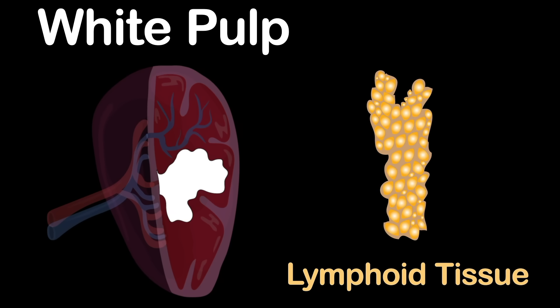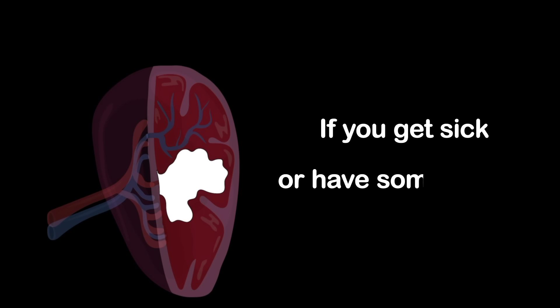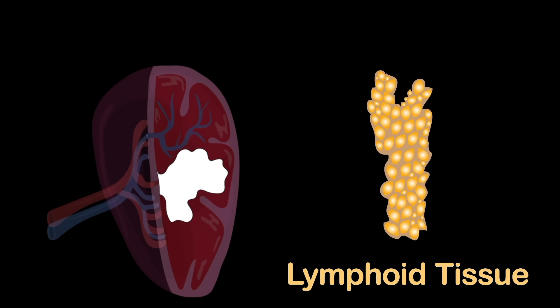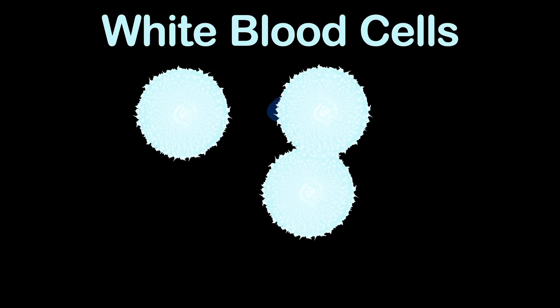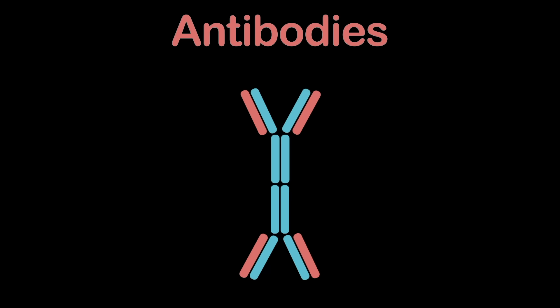The white pulp consists entirely of lymphoid tissue. When you get sick or have some sort of nasty disease, the lymphoid tissue within the white pulp sets your body at ease. It creates white blood cells to fight off the sickness, and then it also makes antibodies that bind to specific antigens.